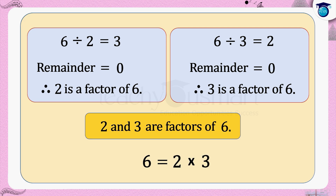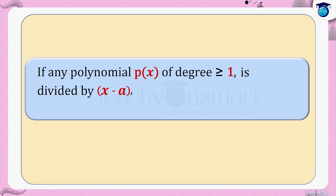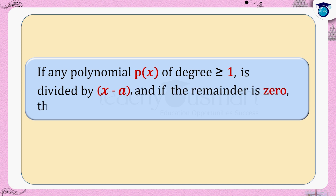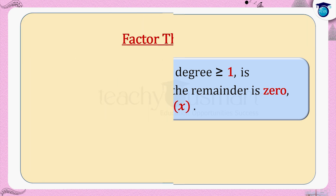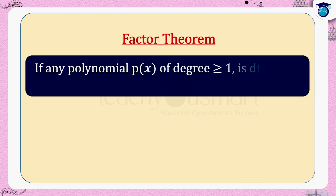Similarly, in the case of polynomials, if any polynomial p(x) of degree greater than or equal to 1 is divided by (x − a), where a is any real number, and if the remainder is 0, then (x − a) is a factor of p(x). This is actually the factor theorem.